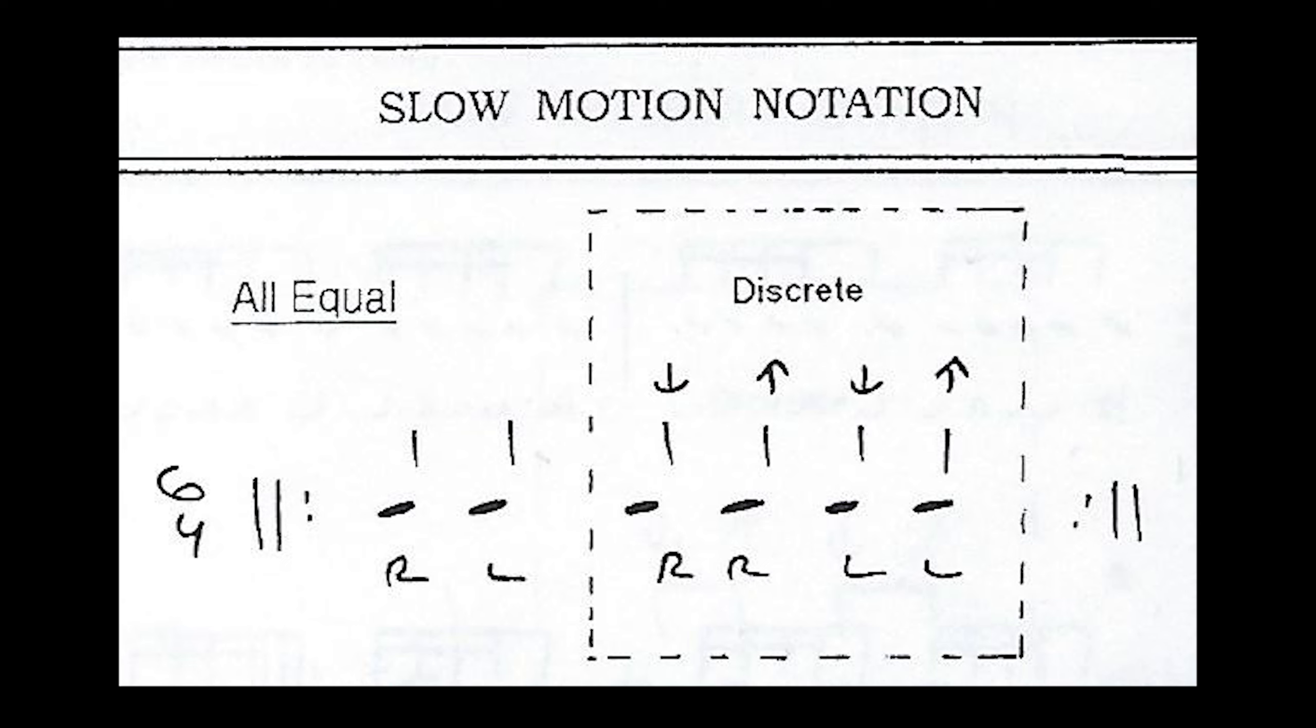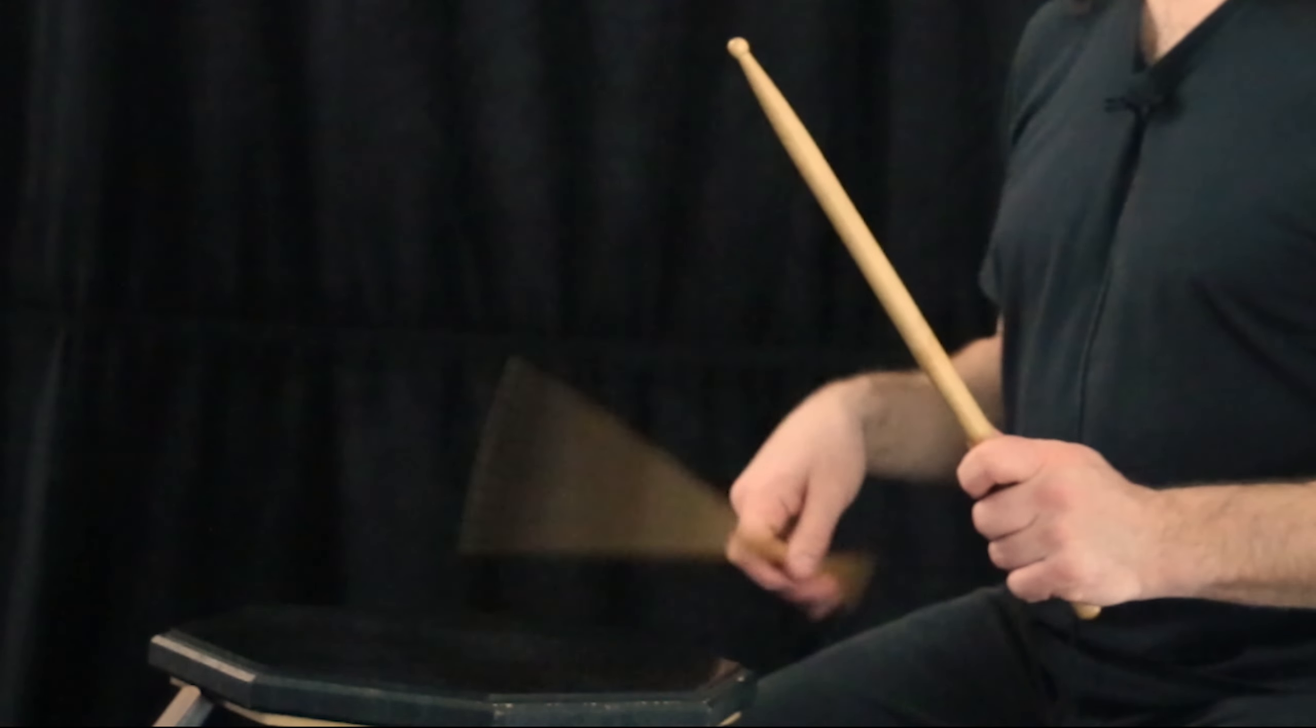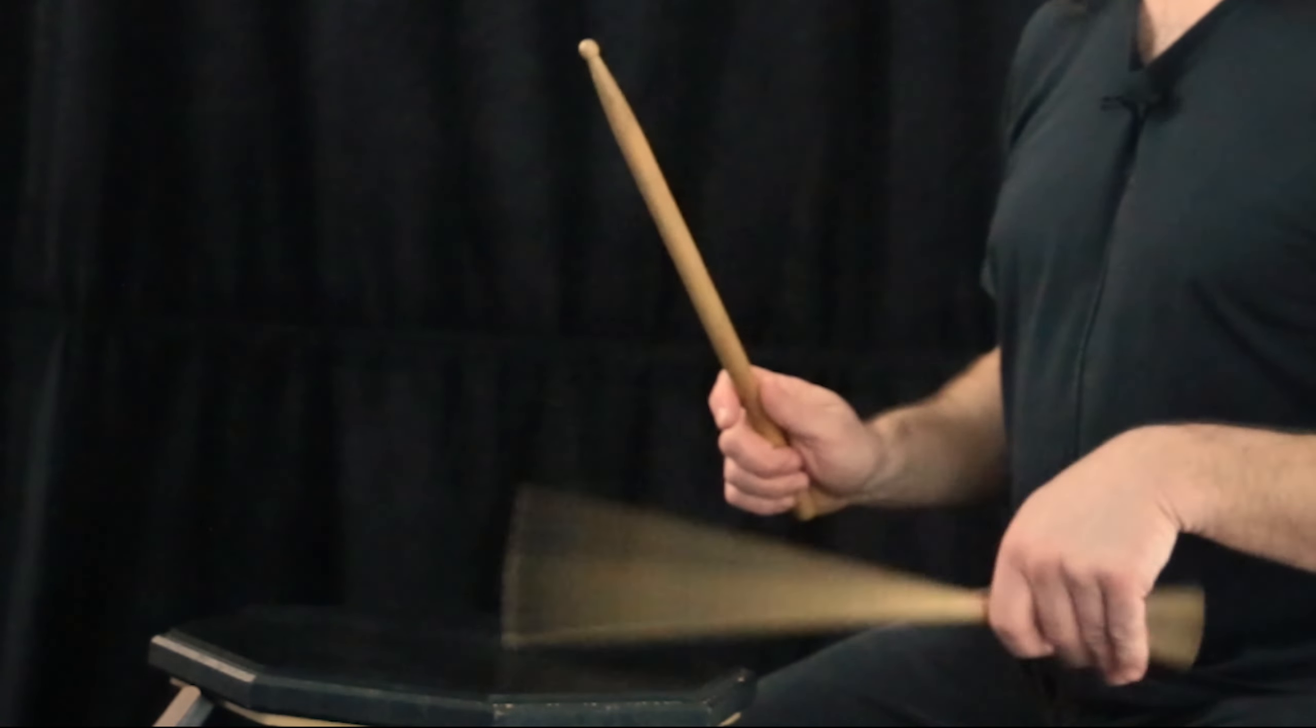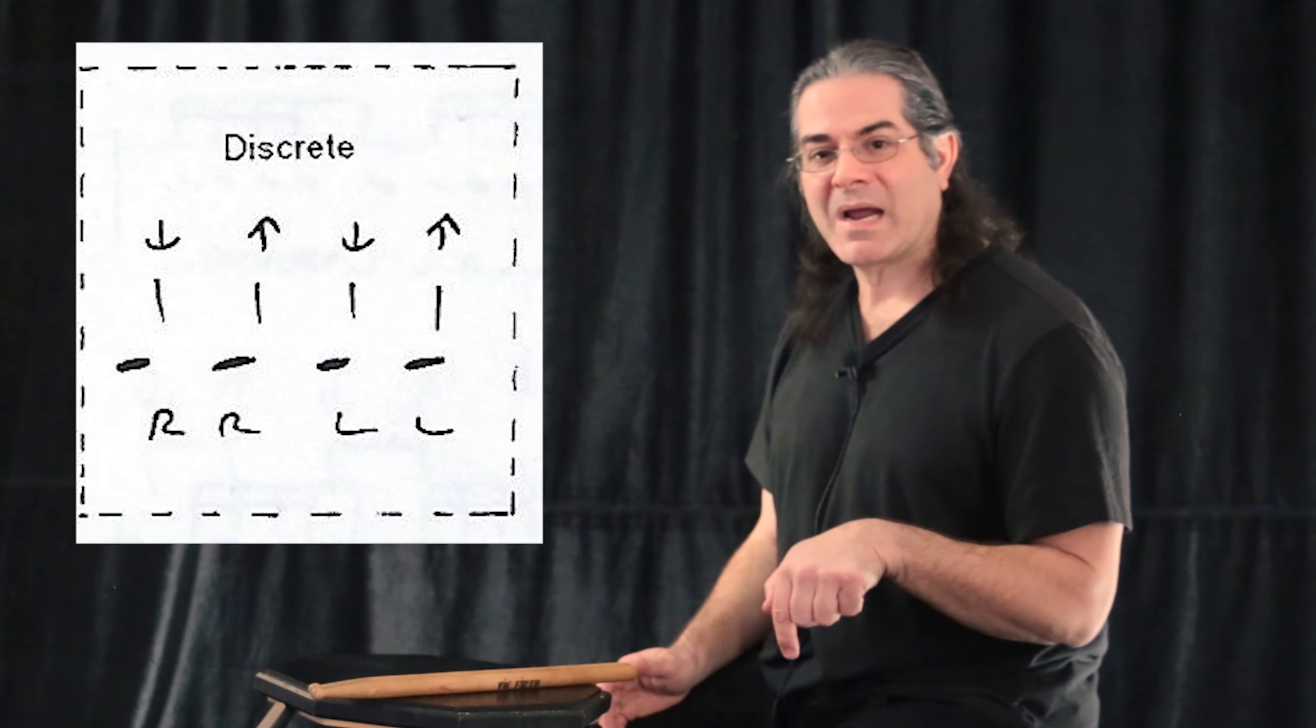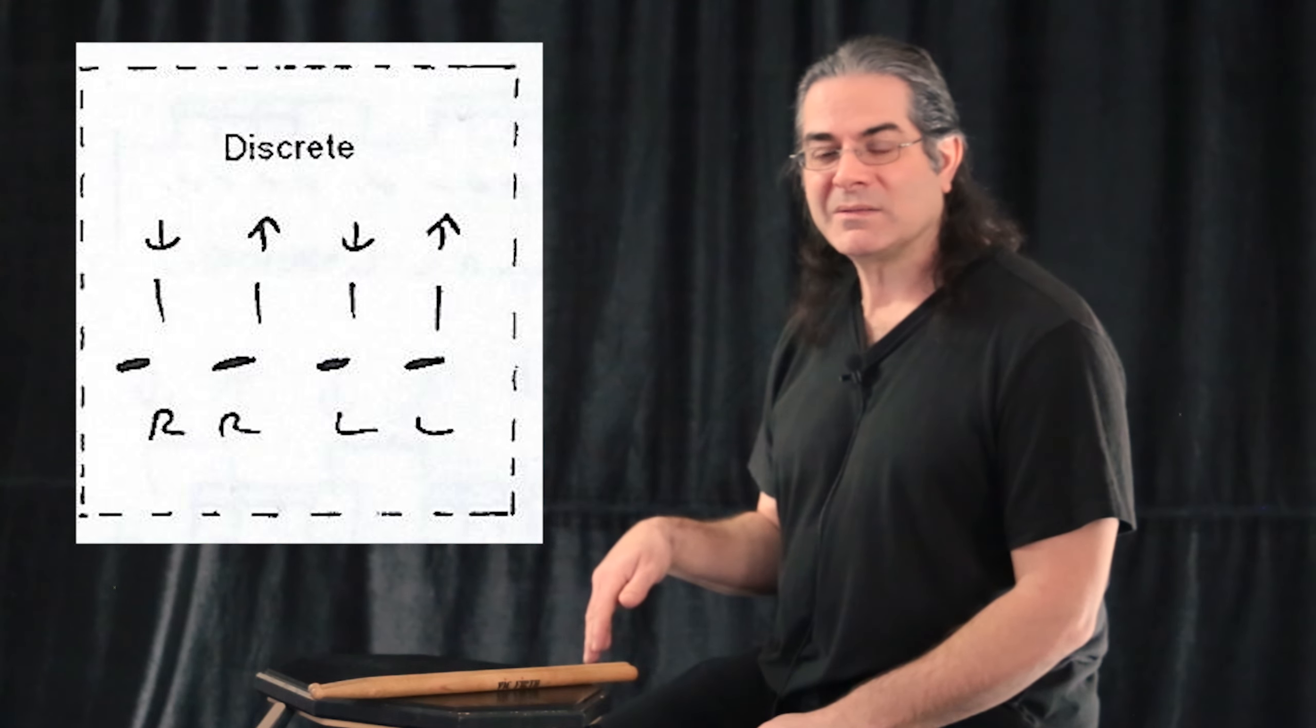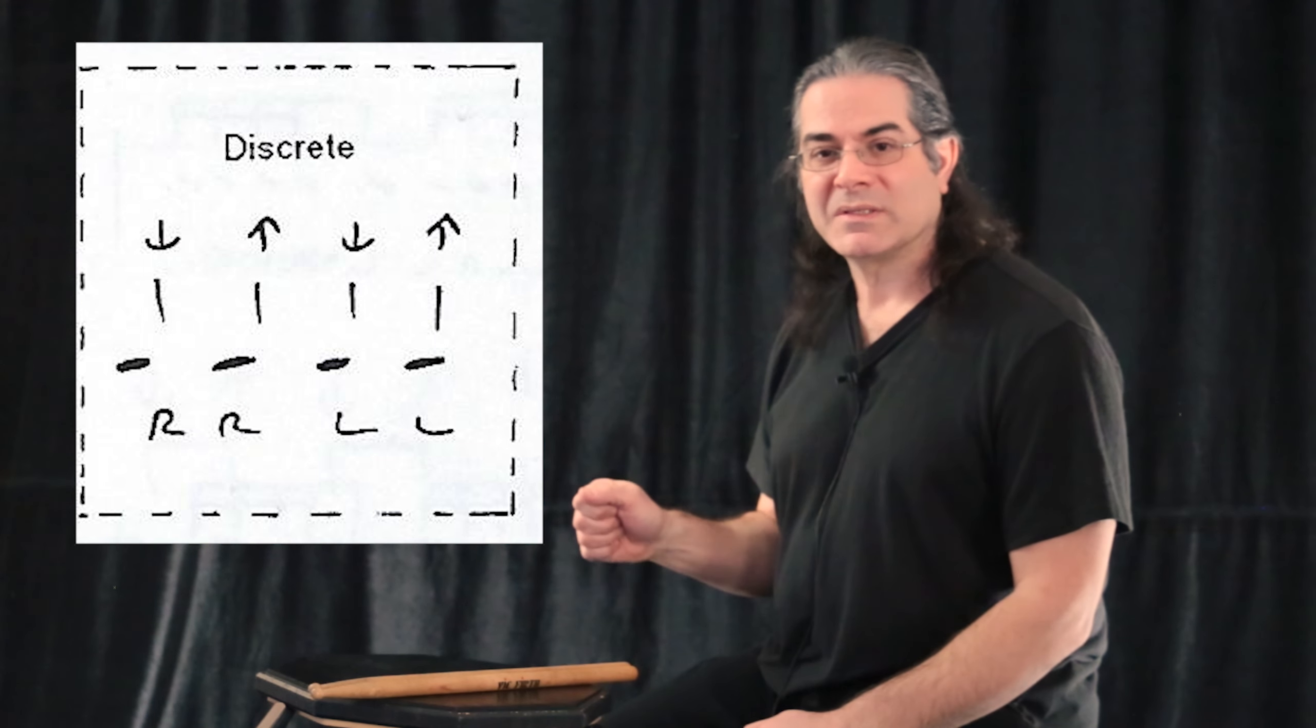The doubles are referred to as discrete, meaning to play a full cycle of open-close before switching hands. He's added the graphics identifying the doubles and using a down arrow for the opening of the hand and an up arrow for the closing of the hand.